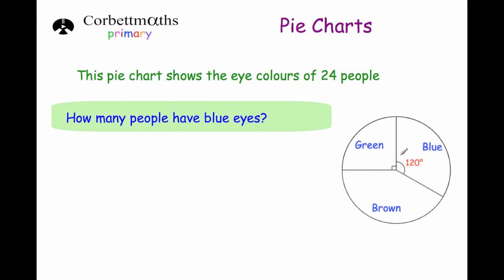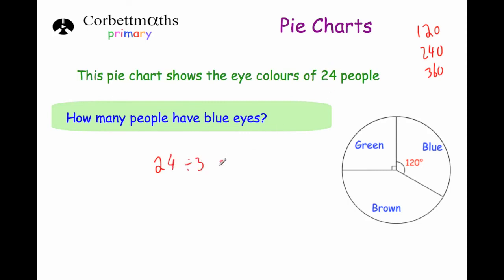The next question says how many people have blue eyes? This section has got an angle of 120 degrees, so that means it's a third of a circle. The reason it's a third is if we count up the angles — 120, 240, and 360 — we can see that 120 fits into a full circle three times. So that's a third of a circle, and to get a third of the number of people we divide 24 by 3, which gives us 8 people with blue eyes.